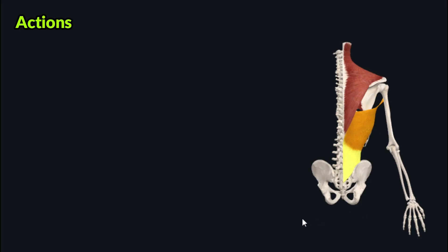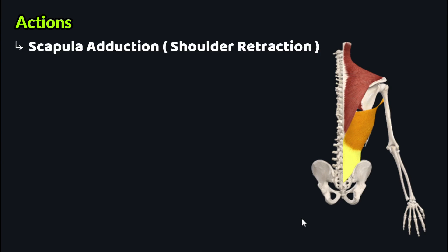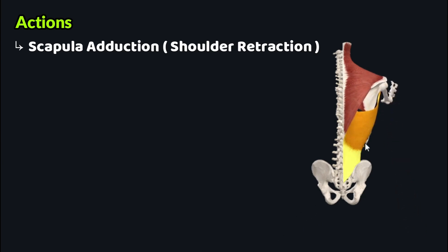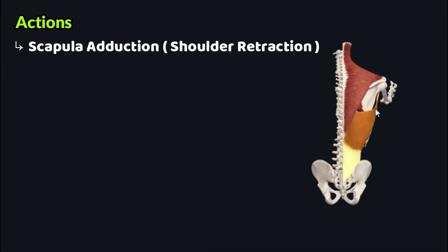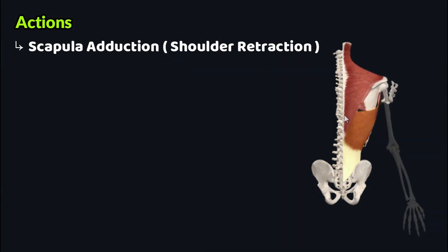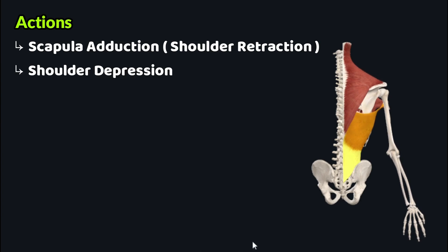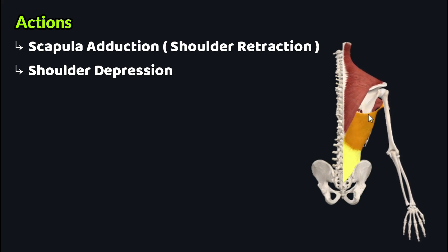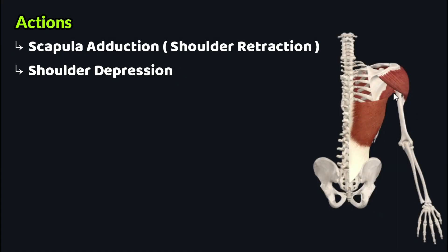The latissimus dorsi performs a wide range of functions. One function is scapula adduction, also known as shoulder retraction — the muscle acts on the inferior angle of the scapula and adducts it. Another action is shoulder depression, where the latissimus dorsi again acts on the inferior angle of the scapula and draws it downward.